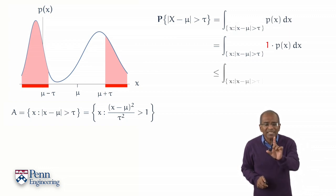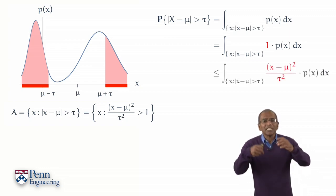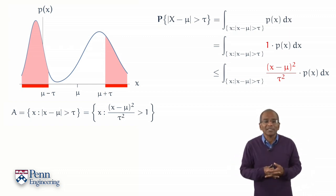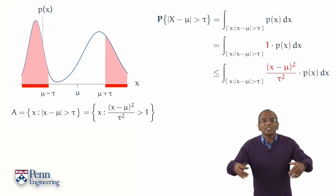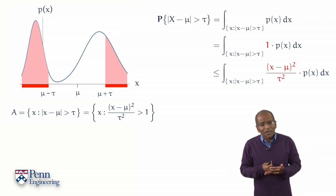And therefore, if I replace the red 1 by x minus mu the whole squared divided by tau squared, I'll have increased the integrand and therefore increased the value of the integral.